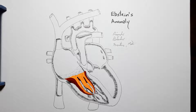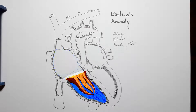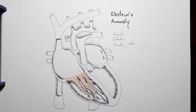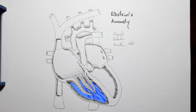...will be lower than it should be. Causing the boundary between the right atrium and the right ventricle to be lower than it should be, meaning the right atrium will have a larger volume than it should, and the right ventricle will be smaller than it should.